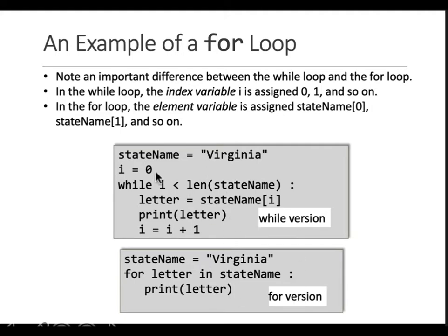Just notice the difference in these two. Let's start with the while loop. You're defining a string called stateName, then you define a variable i as zero. Then what are you saying? While i is less than length of this variable. Length of Virginia is eight. While i is less than eight, is i less than eight? Yes, it's zero. So letter is stateName[0], which is uppercase V.